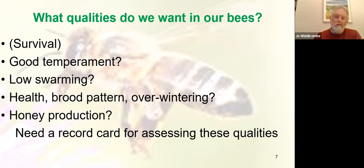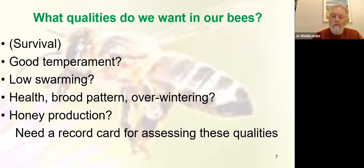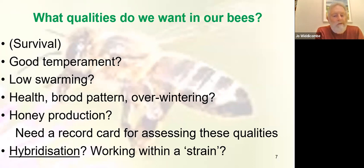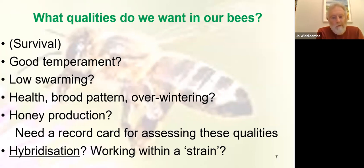It's important to get a record card for assessing these qualities. We don't often talk about this — nearly always when people are on about record cards, they're on about the management of the bees. But this is quite different: this is assessing their qualities, which I don't think enough of us do. We have about 28 subspecies in the world that evolved in Europe, Africa, and the Near East — all evolved to suit certain circumstances. When we start crossing them, it gets difficult.